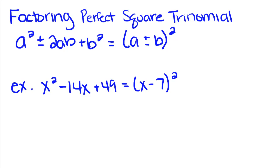Today we're going to talk about factoring perfect square trinomials. A perfect square trinomial will be written in this form: a squared plus or minus 2ab plus b squared. And if a trinomial comes in this form, whenever you go to factor it, all you have to do is write a plus or minus b, squared.